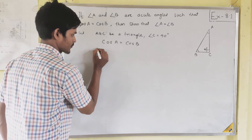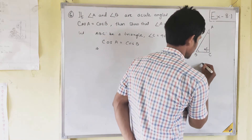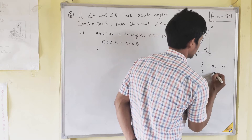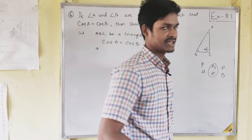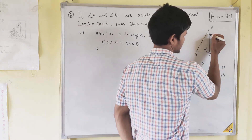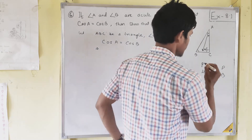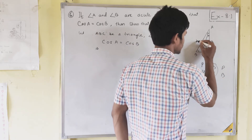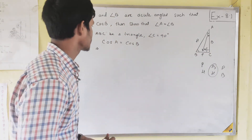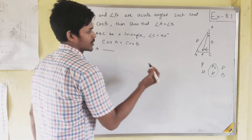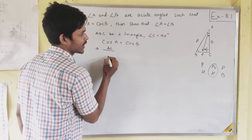Now, what is the ratio of cos A? Using the mnemonic Pandit Badri Prasad Har Har Bole — this part gives you cos. If angle A is theta, then the base is AC and the side opposite to angle A is the perpendicular. The hypotenuse is the side opposite the 90-degree angle. So cos A equals base by hypotenuse, that is AC by AB.